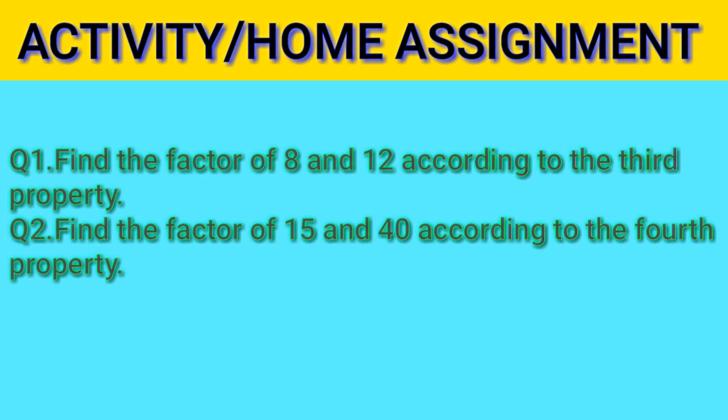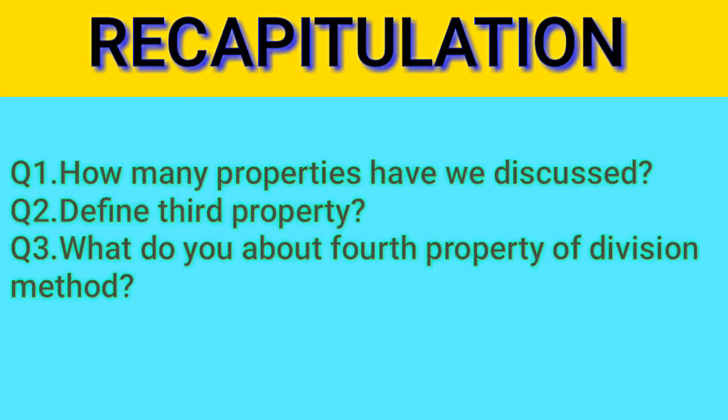Question number two: find the common factor of 15 and 40 according to the fourth property. Tremendous! The factor is 5, because 15 and 40 are both divisible by 5, and their difference is 25, and 25 is also divisible by 5.